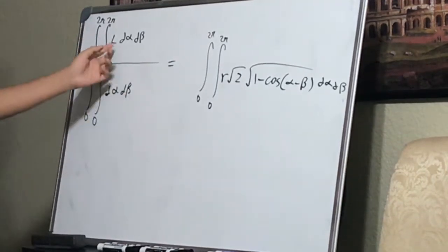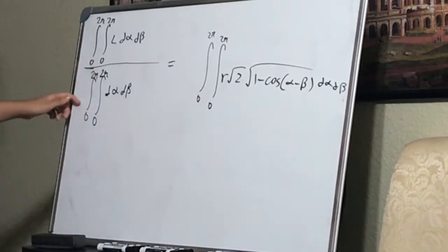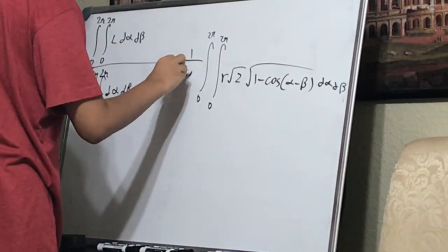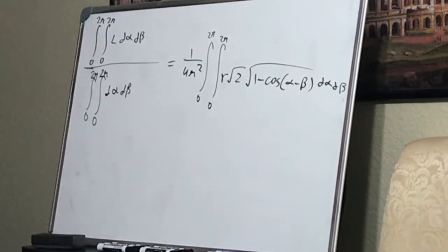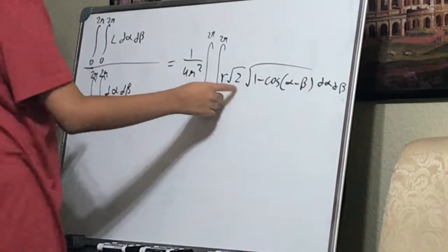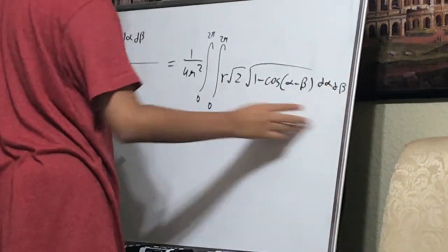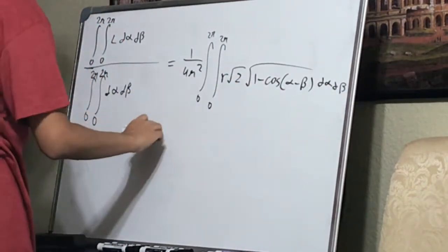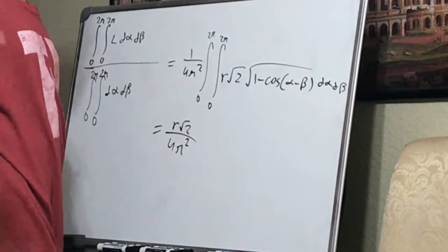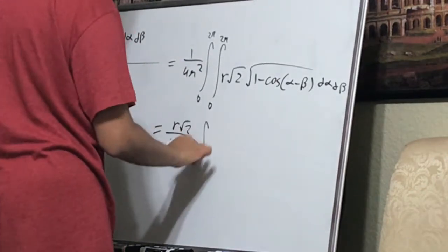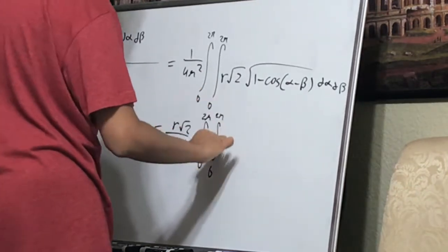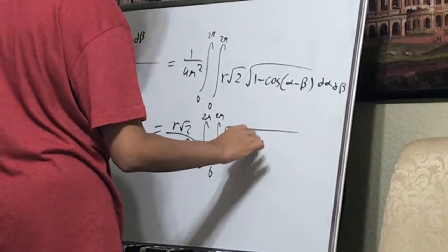All I have to do is follow through with it. We plug in what we got for L. If you go ahead and evaluate the denominator, it's one over four pi squared. We can take the R root two out as a constant to get R root two over four pi squared. Integral from zero to two pi, integral from zero to two pi, of the square root of one minus cosine(α minus β) d alpha d beta.